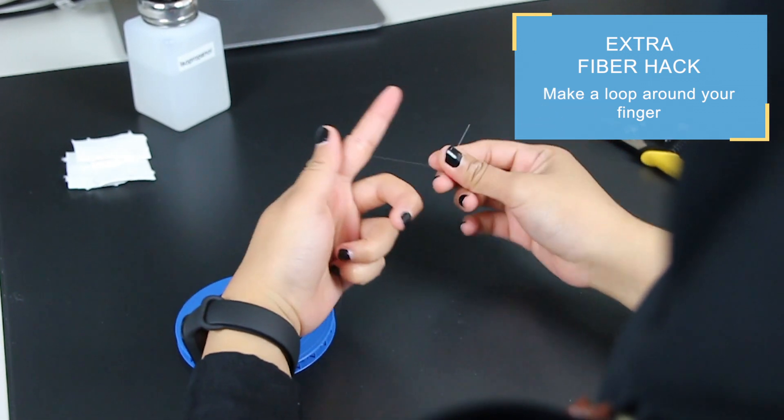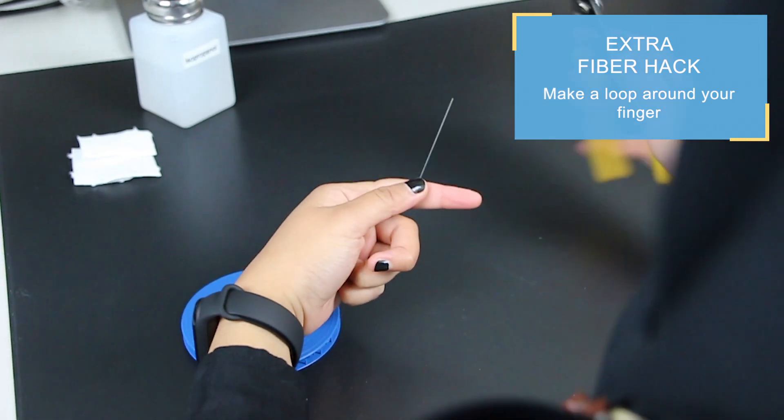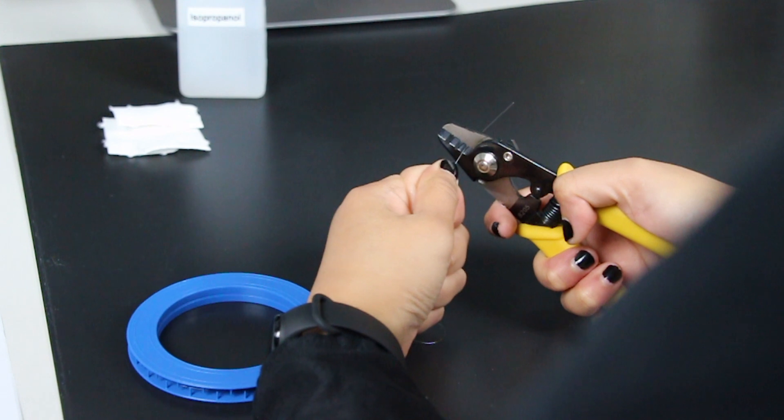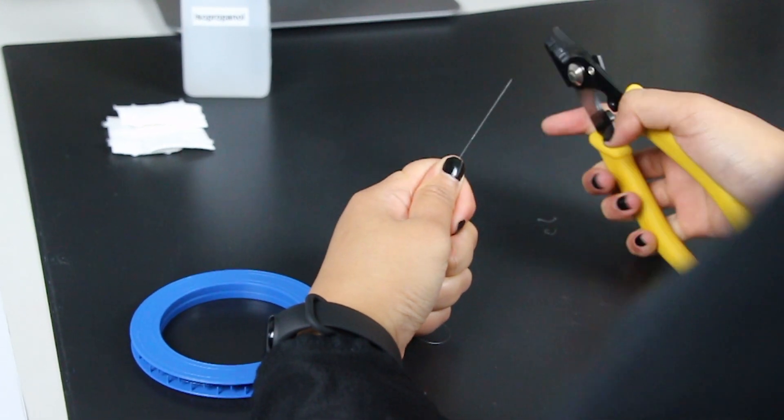Make a loop or two with the fiber around your finger to get extra grip. That was quick! Let's repeat it step-by-step.